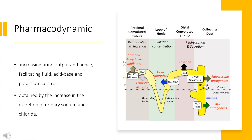Pharmacodynamics: The administration of torsemide can attenuate renal injury and reduce the severity of acute renal failure. This effect is obtained by increasing urine output and facilitating fluid, acid-base, and potassium control, through the increase in the excretion of urinary sodium and chloride.